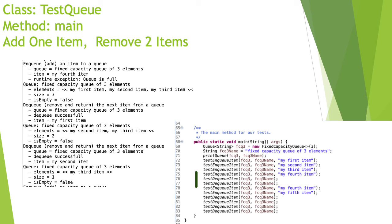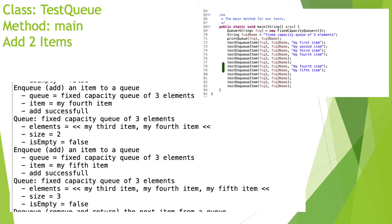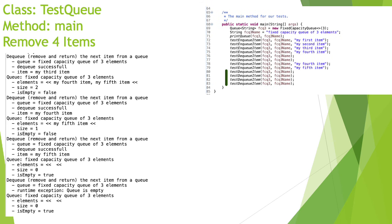After that dequeue, the queue contains only the third item. Then we add the fifth element, and now we have a full queue again with the third, fourth, and fifth items.